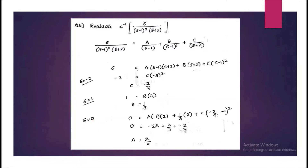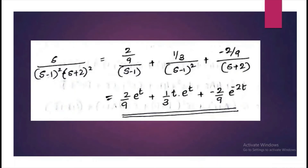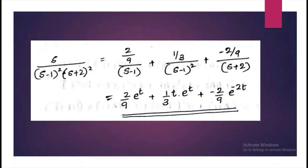Now that we have the three constants A, B, C, we can easily find the inverse. Constants 2 by 9, 1 by 3, and minus 2 by 9 are brought outside. S minus 1 is a shift, so it gives E raised to plus t. S minus 1 the whole square gives E raised to t, and corresponding to 1 by S squared there is a t term. Then S plus 2 gives E raised to minus 2t.